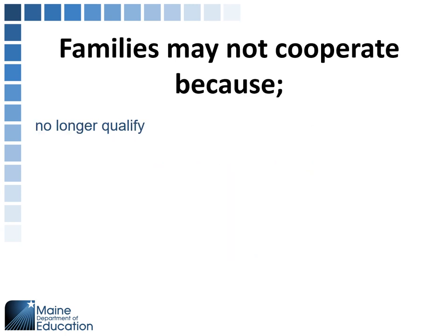Families may not cooperate because they no longer qualify. Families may have filled out the application in September; you're doing the verification process in October or November. They've gotten a pay raise, they've gotten a better job, they're making more money and may no longer qualify, so they may not respond. Hopefully they'll at least respond and say they don't qualify anymore.